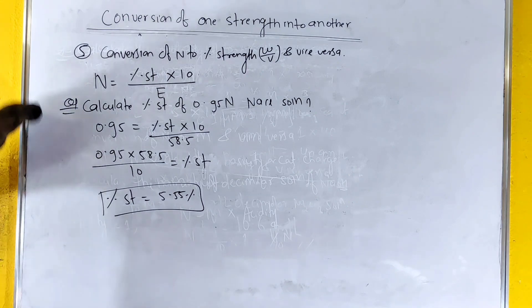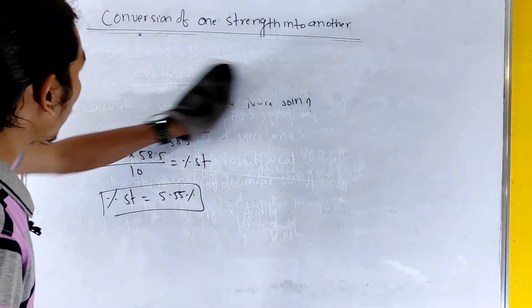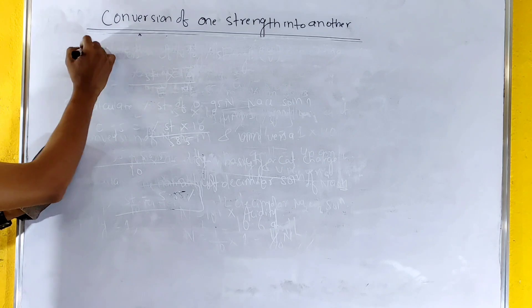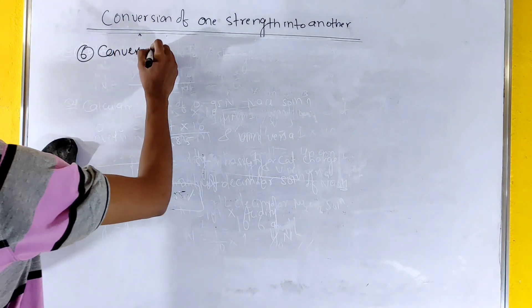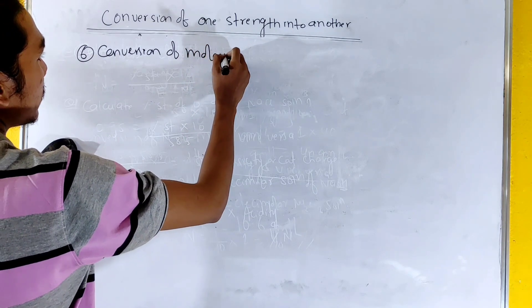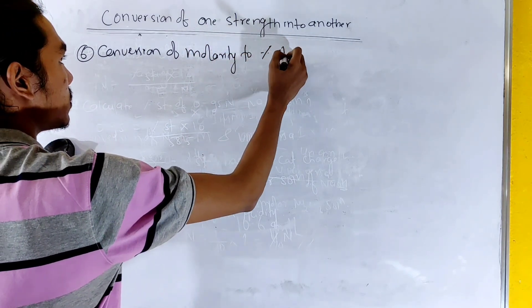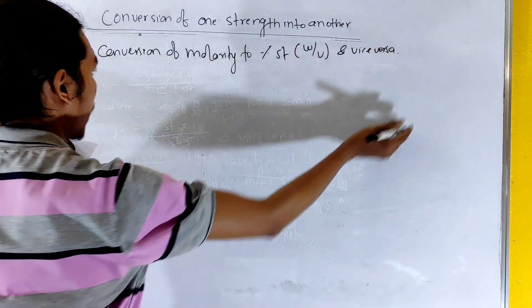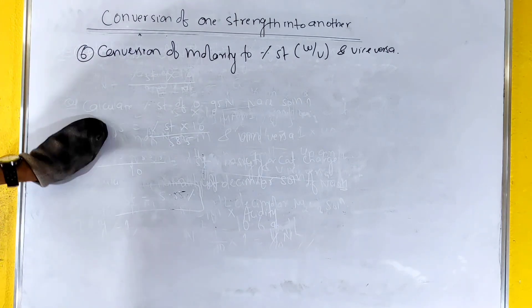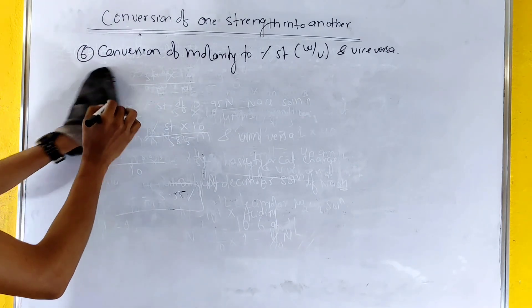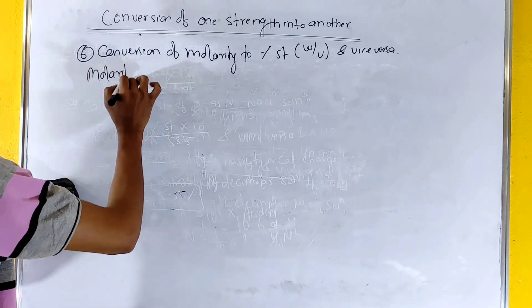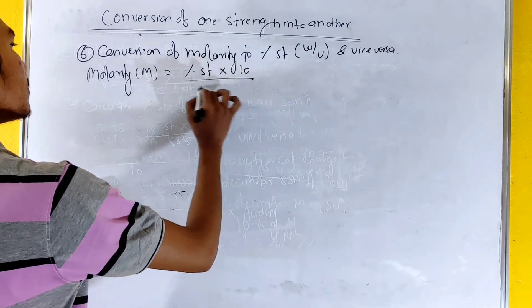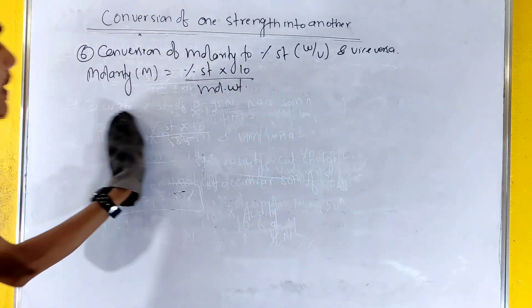Number 6 — conversion of molarity to percentage strength w/v and vice versa. The formula is: molarity equals percentage strength into 10 divided by molecular weight.